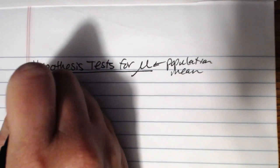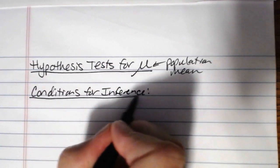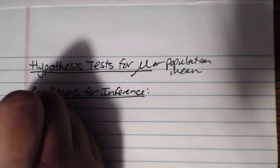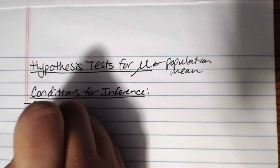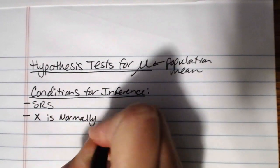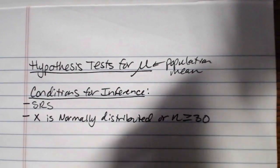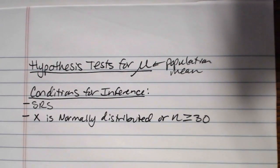Which test we run is going to depend on whether or not the population standard deviation is known. So let's first talk about our conditions that are necessary for inference. You will find that these are the same as the conditions that were necessary for computing a confidence interval. Same conditions apply when conducting a hypothesis test for mu. We need to have a simple random sample.